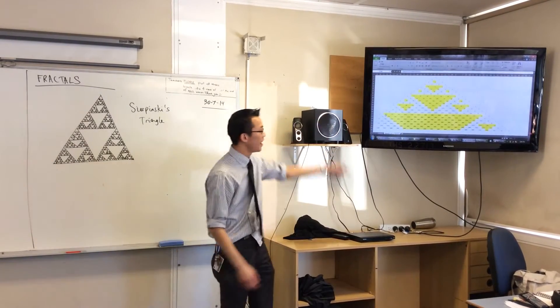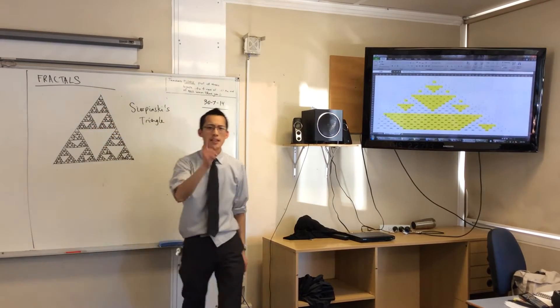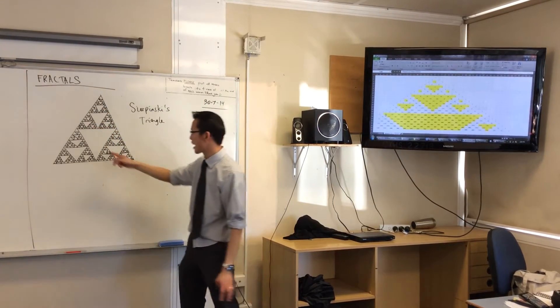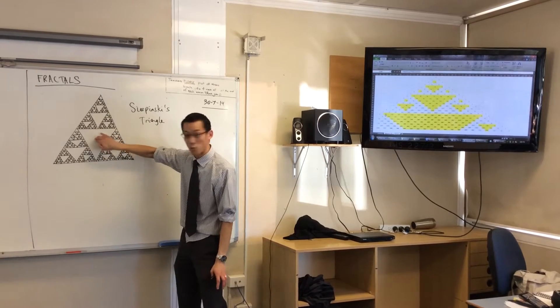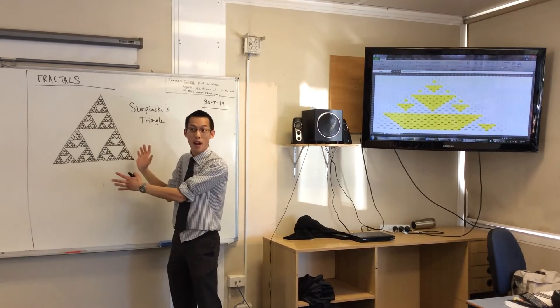And it keeps going. It keeps going. You just get these. And by the way, this is why it's so important that you didn't actually construct the triangles in the middle, right? Because you would ruin Sierpinski's Triangle, okay?